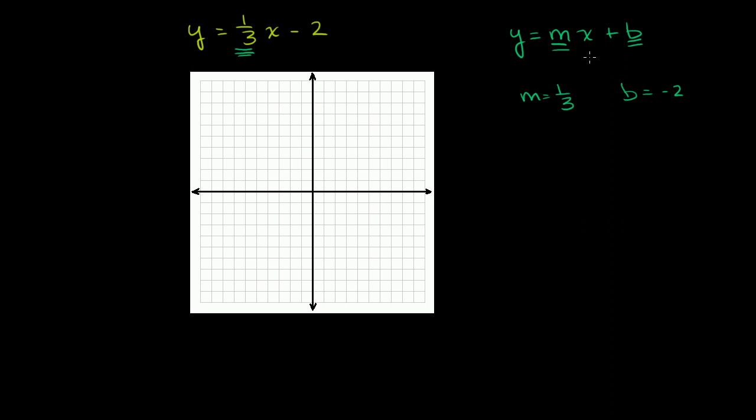So whenever you look at an equation in this form, it's actually fairly straightforward to graph this line. b is the y-intercept. In this case, it is negative 2. So that means that this line must intersect the y-axis at y is equal to negative 2. So it's this point right here, the point 0, negative 2.